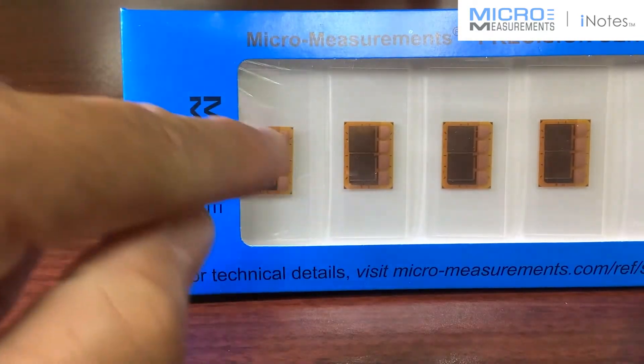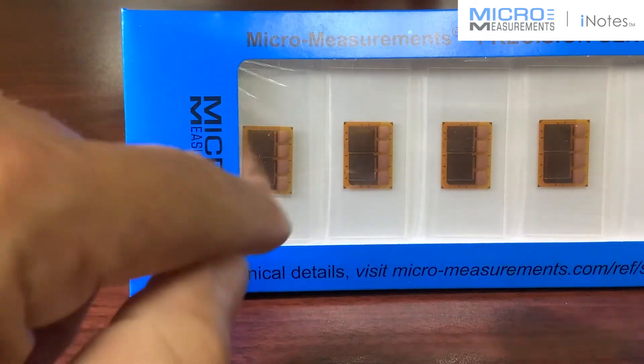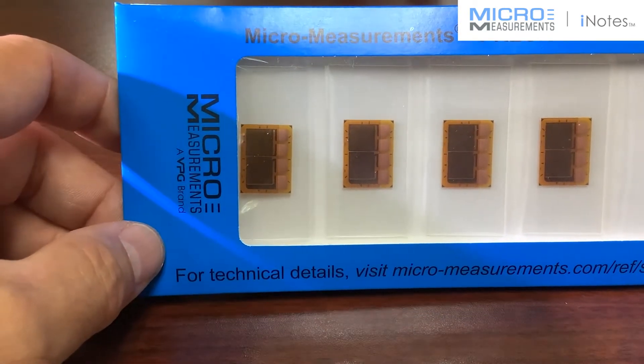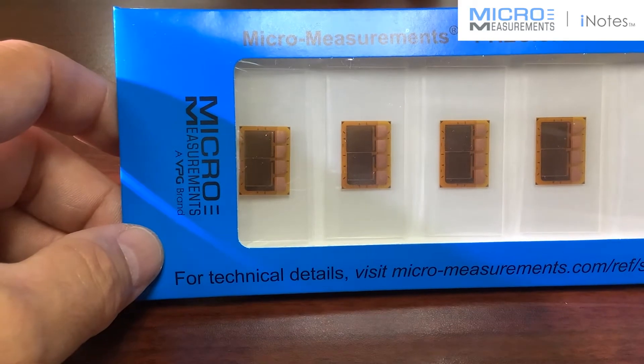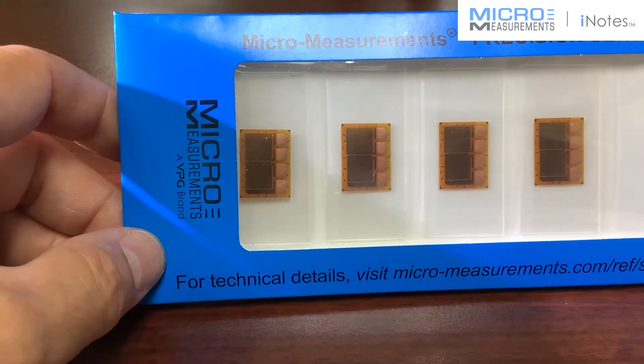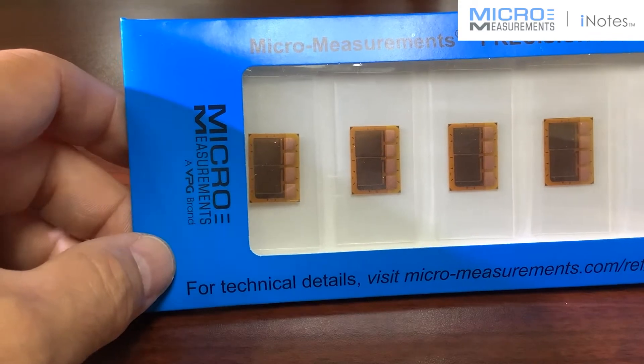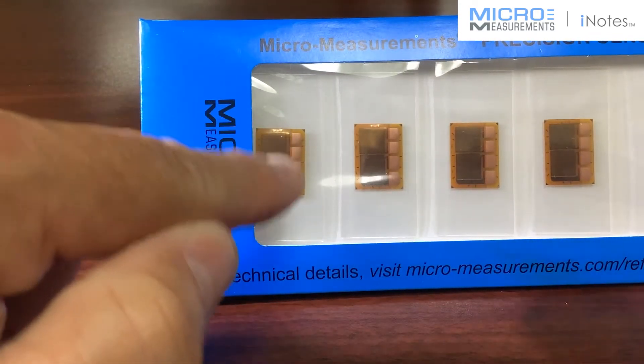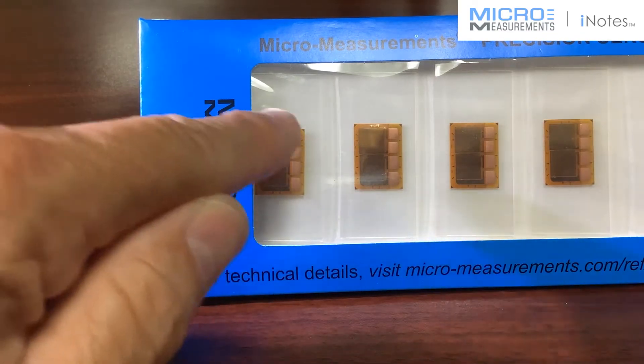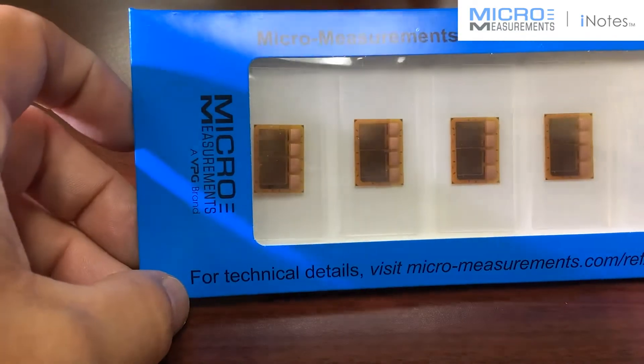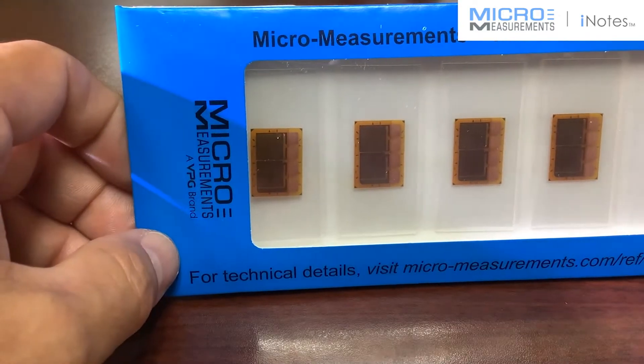This one happens to have the CEA construction that we've offered since the early 1980s, and CEA series gauges have been some of our most popular types of strain gauges for general purpose testing. CEA series simply means that it's got these larger copper-coated tabs that you can see, and there's also a film overlay over top of the grids of the gauge to help protect them while you and I are trying to get them installed.